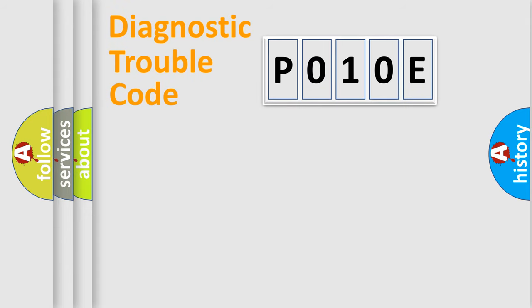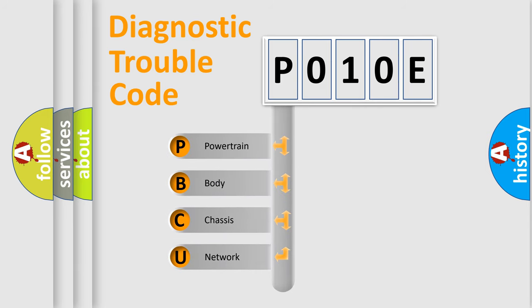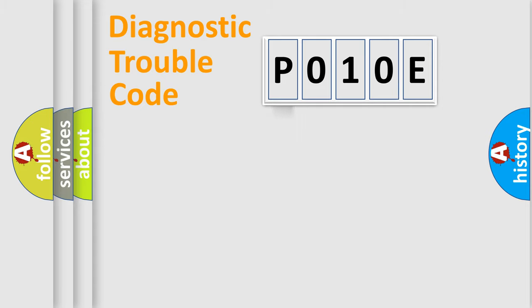First, let's look at the history of diagnostic fault code composition according to the OBD2 protocol, which is unified for all automakers since 2000. We divide the electric system of an automobile into four basic units: Powertrain, Body, Chassis, and Network. This distribution is defined in the first character of the code.